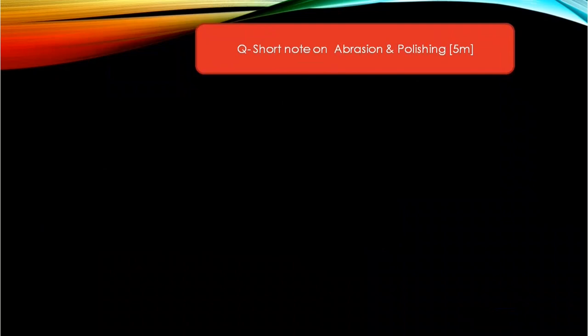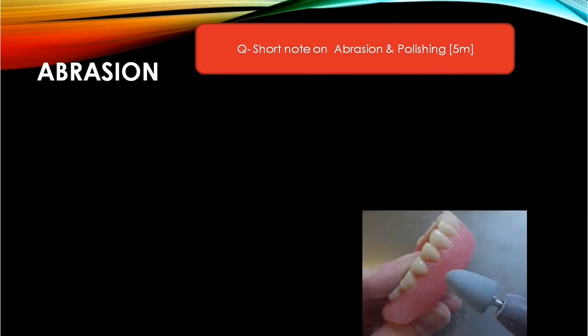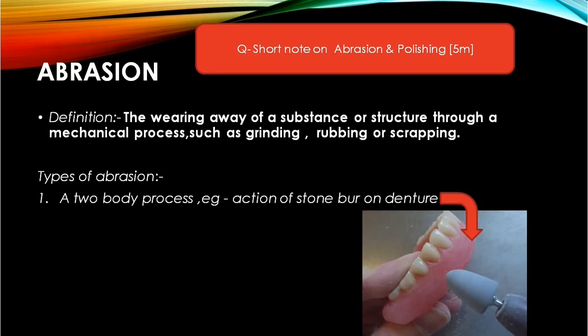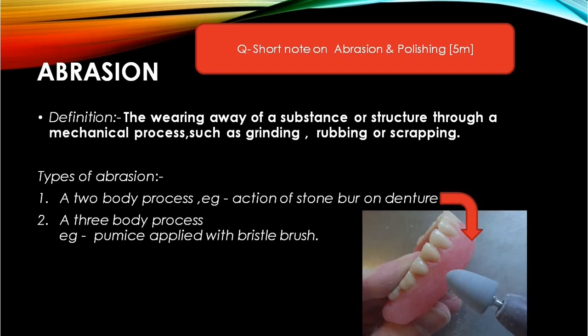Abrasion is the wearing away of a substance or structure through a mechanical process such as grinding, rubbing, or scraping. It is of two types based on the number of bodies undergoing wear: two-body wear and three-body wear. An example of two-body wear is using a stone bur on a denture, and an example of three-body wear is applying pumice with a brush on acrylic.